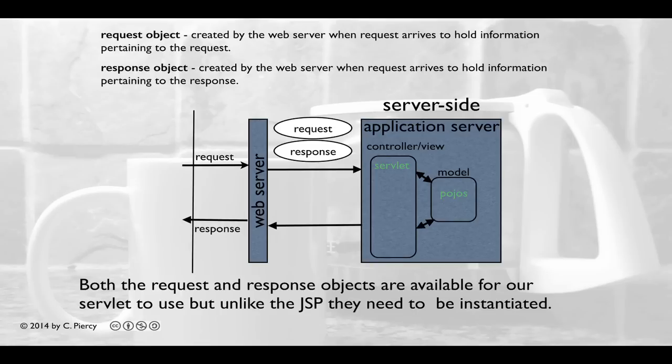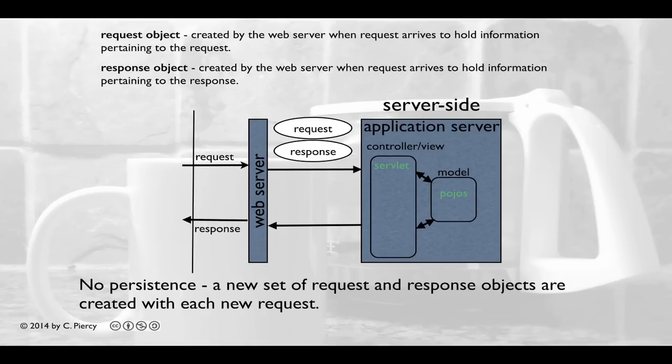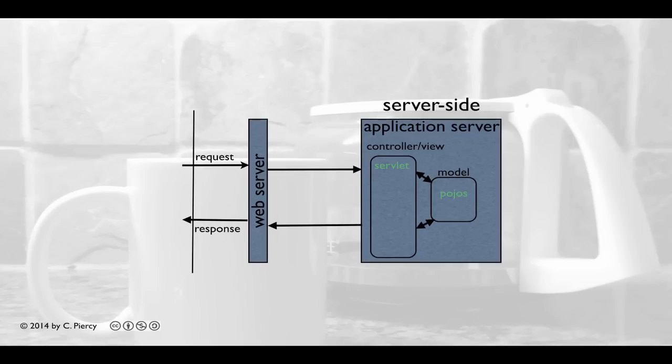While things are going on on the server side, both the request and response objects are available for our servlet to use. But unlike with JSPs, they need to be instantiated. We'll see in Eclipse that they're instantiated for us when we generate the servlet file. One thing we also have to remember is that there is no persistence. This means that the server does not remember our request and response once the response heads back to the client. A new set of request and response objects will be created with each new request and discarded with each response.